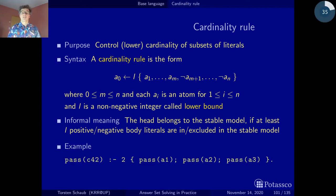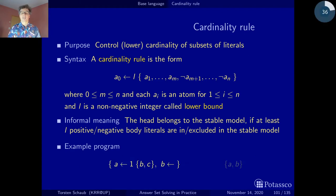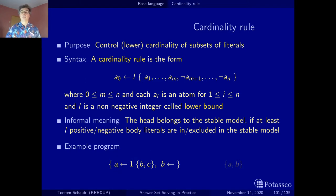Let's look at a more natural example: when do you pass a course? There are three assignments a1 to a3, and if you pass at least two among them, then you pass the whole course. For a more technical example using letters A, B, and C: we have the fact B, meaning B is true. We say that if at least one of B or C is true, then we get A. Since B is a fact, the body is satisfied and we get A. The result is a single stable model {A, B}.